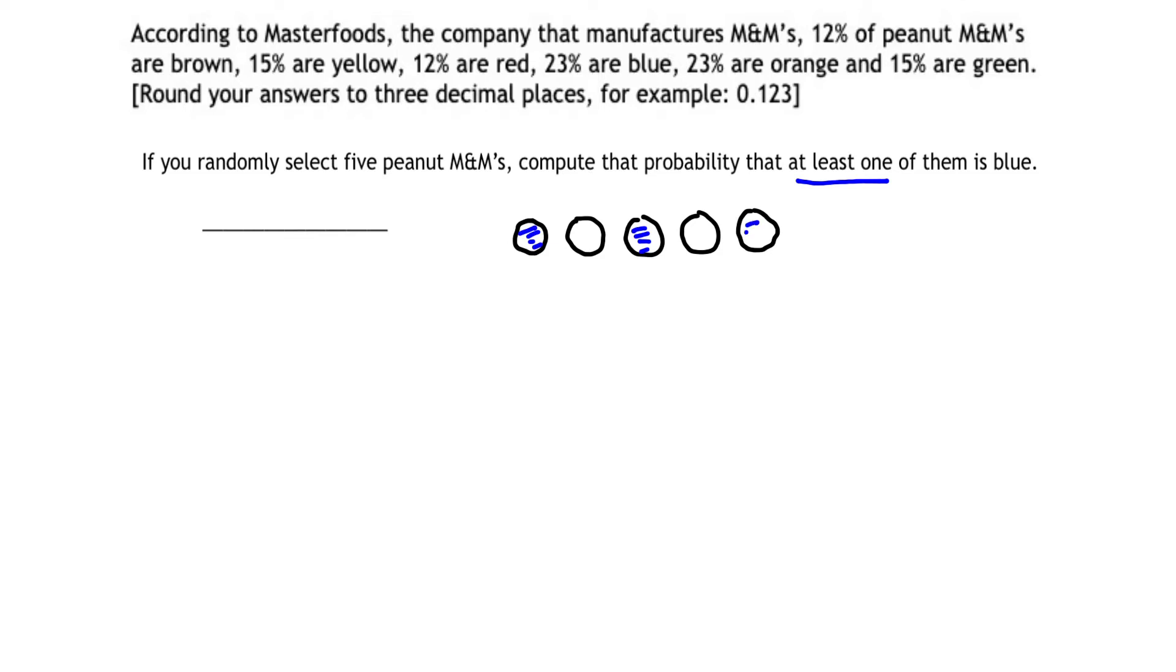Or the first and the third and the fifth, but not the second and the fourth. Or maybe it was just the second one that was blue, or maybe they're all blue. So there's so many different combinations. It's overwhelming.